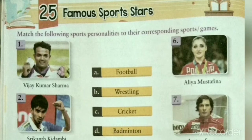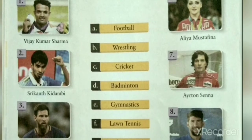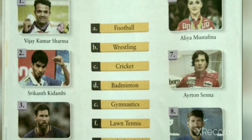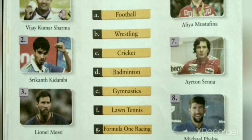In the given exercise, we have to match the sports person with the sports or games they play. The first picture is the sports personality Vijaykumar Sharma, famous for shooting — match 1 with I, shooting. The second picture is Shrikant Kidambi, famous for badminton — match 2 with D, badminton. The third picture is Lionel Messi, famous for football — match 3 with A, football.